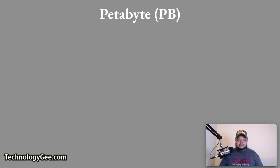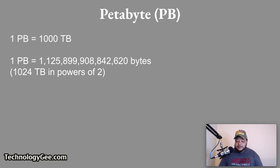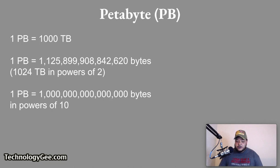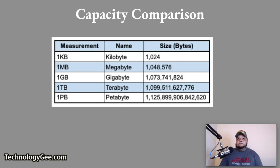A petabyte is equal to 1,000 terabytes. Depending upon the device, a petabyte is either a very large number in bytes or 1,024 terabytes when expressed in powers of 2, or another large number when expressed in powers of 10. Petabyte-size drive arrays are mostly used for cloud storage and backup systems.